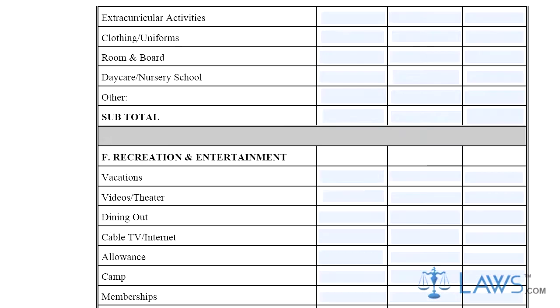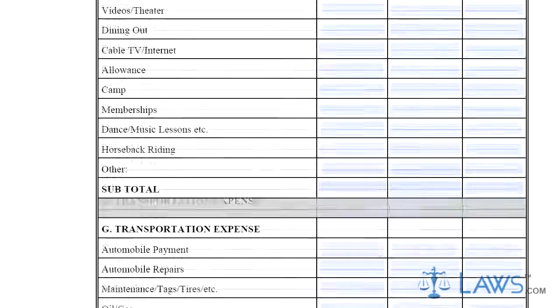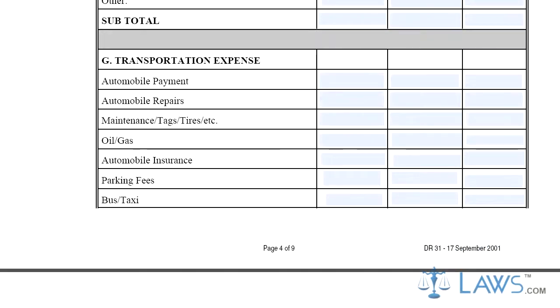Step 5. Section F concerns costs related to entertainment. Step 6. Section G concerns transportation costs. Step 7. Section H concerns gifts, including donations to charity.